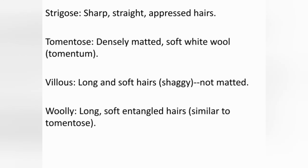Strigose: sharp, straight, appressed hairs. Tomentose: densely matted, soft white wool. Villous: long and soft hairs. Ullii: long, soft and angled hairs, similar to tomentose.